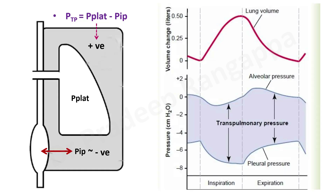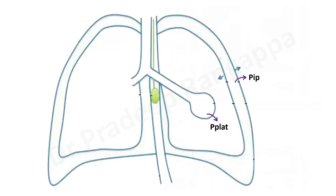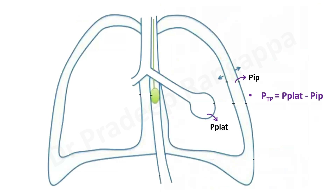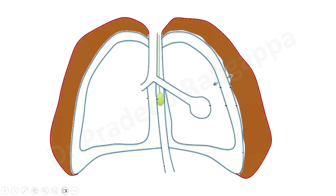We need to understand how these pressures vary during inspiration. In another representative diagram, p-plat represents alveolar pressure, and intrapleural pressure is measured via the esophageal catheter sitting in the esophagus. The difference between these two values is what we measure as transpulmonary pressure: p-plat minus intrapleural pressure.